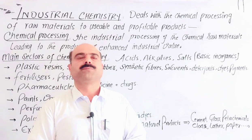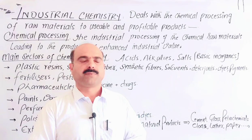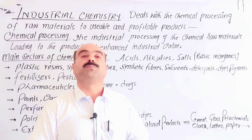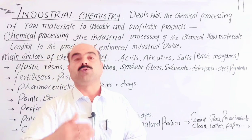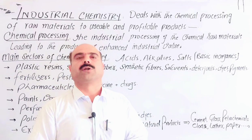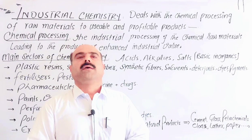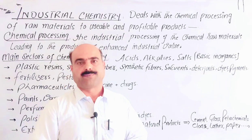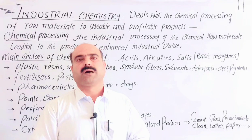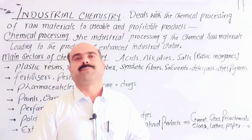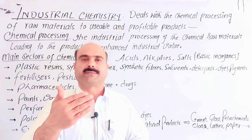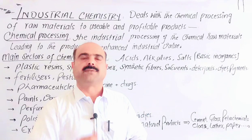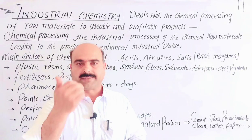Similarly, inks are produced for writing purposes. The fertilizer industry provides us fertilizers which are used for crop production — to enhance and increase crop yields. Similarly, industrial processing gives us pesticides which are used against pests: to control, kill, or inactivate pests. These are further divided into insecticides, fungicides, viricides, bactericides, and rodenticides.